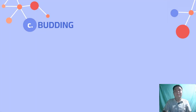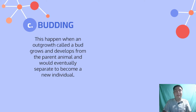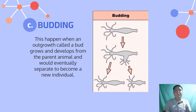The third type of asexual reproduction is budding. This happens when an outgrowth called a bud grows and develops from the parent animal and eventually separates to become a new individual. A few unicellular organisms such as bacteria, fungi like yeast, and protozoa, as well as metazoan animals including certain cnidarian species like hydra, and various plants undergo this type of reproduction which is budding.